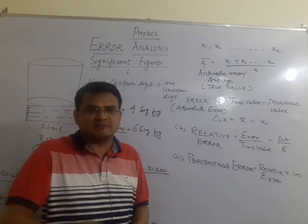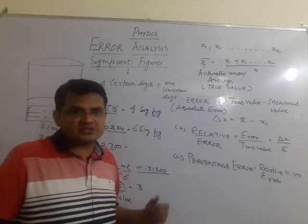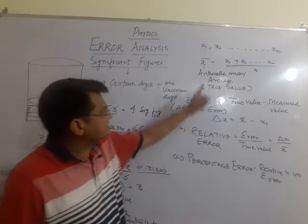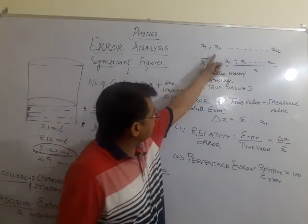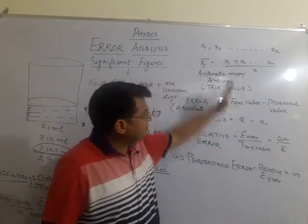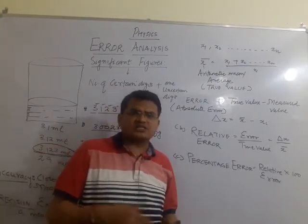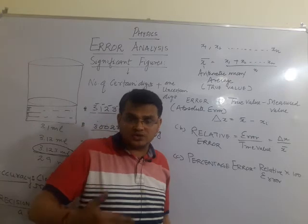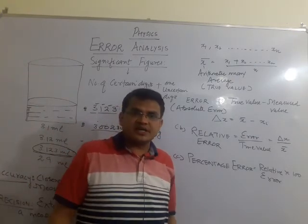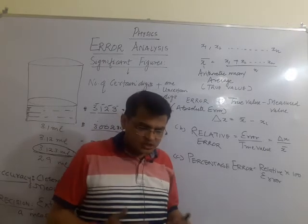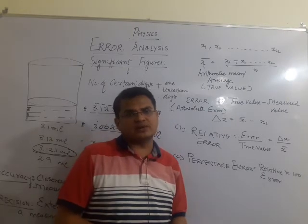Now, errors are inherent and there are many types of errors. Systematic errors occur in a pattern — an increasing pattern or a decreasing pattern. The second type is instrumental error, which occurs when we are reading from an instrument.